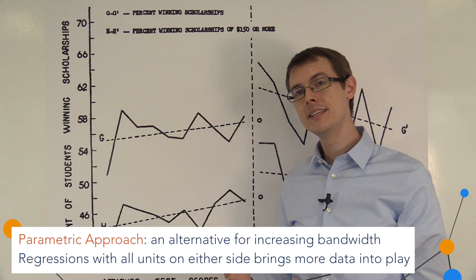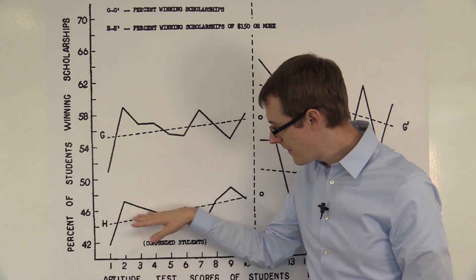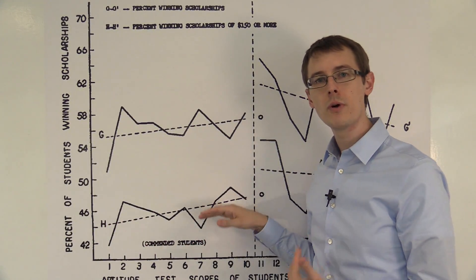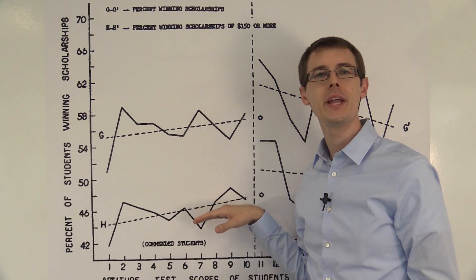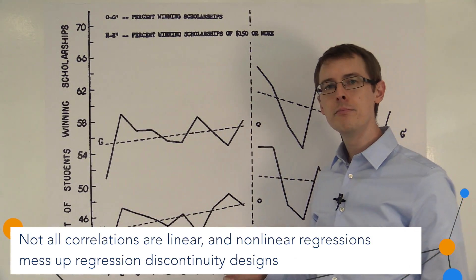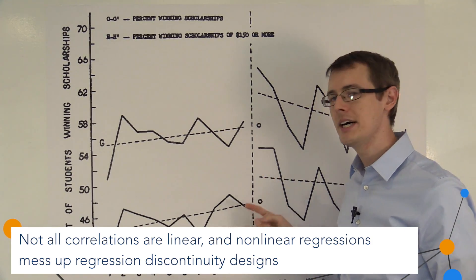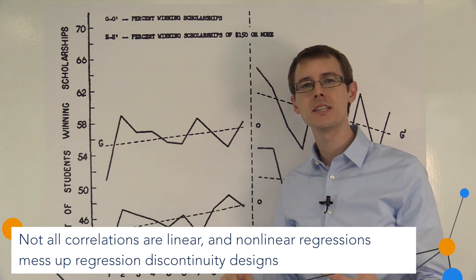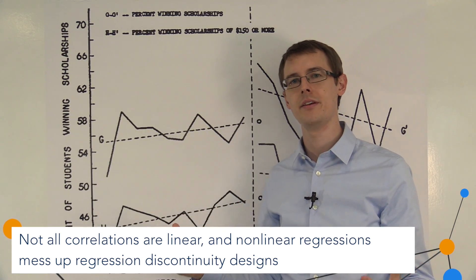The downside is you really have to make sure that this specification is correct, that it truly is sort of a linear relationship. And if this linear relationship isn't valid, then you might be getting some extra bias because of misspecification, because of a problem with your statistical method.